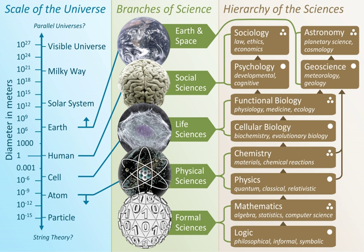Certain research areas are interdisciplinary, such as biophysics and quantum chemistry, which means that the boundaries of physics are not rigidly defined. In the 19th and 20th centuries, physicalism emerged as a major unifying feature of the philosophy of science as physics provides fundamental explanations for every observed natural phenomenon. New ideas in physics often explain the fundamental mechanisms of other sciences, while opening new research areas in mathematics and philosophy.